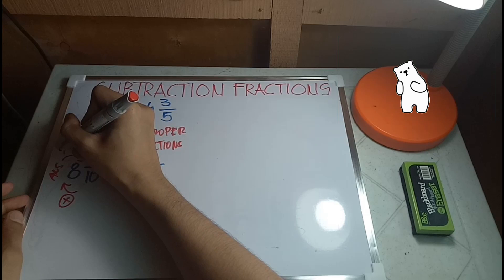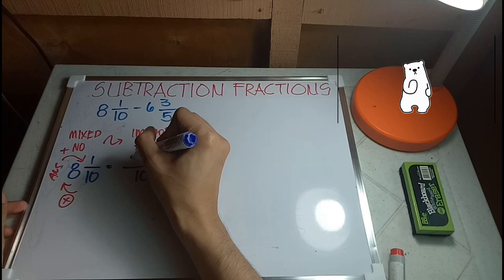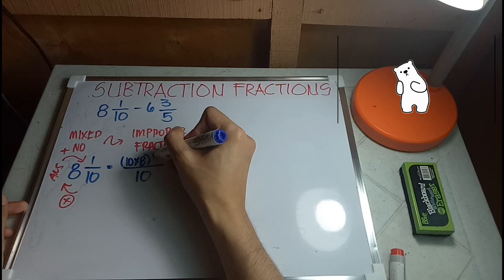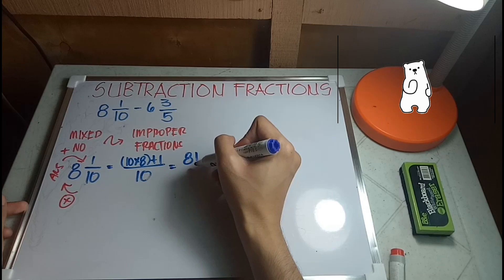After getting the answer, we will now add this to the numerator. So 10 times 8, I'll put it in parenthesis, plus 1. So that would be 10 times 8 is 80, 81 over 10.